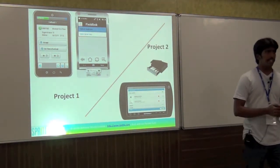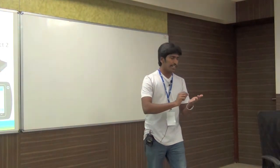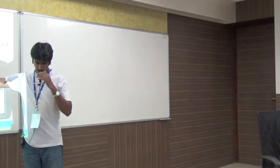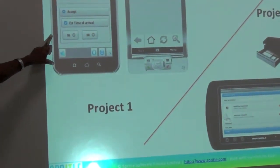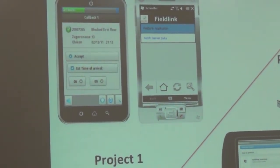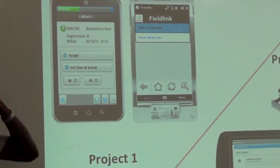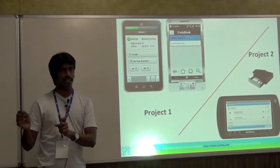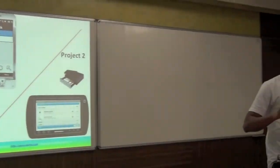This is another application — the service engineer takes this device, goes and does maintenance work for a lift or some equipment, and then he can get a signature from the customer saying the repair has been done. As you can see, we developed it for Android and Windows Mobile. Windows Mobile 6.5 is a crazy operating system because it doesn't support the cool things — you have to write JavaScript using document.getElementById and basic JavaScript. We came up with this application covering Android, iPhone, and Windows Mobile.